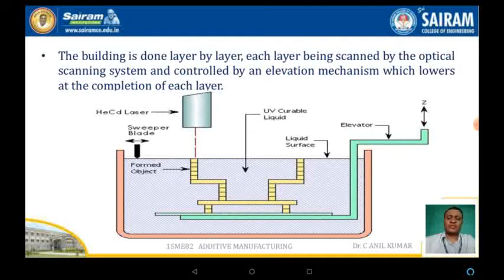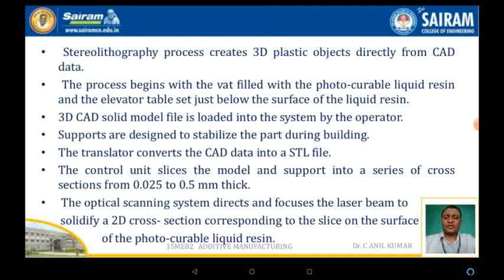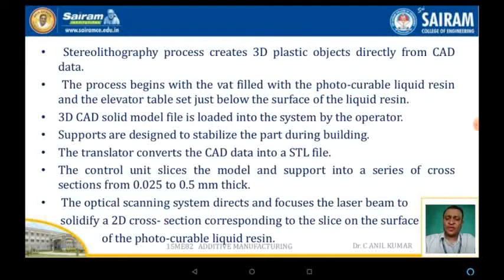Building is done layer by layer. Each layer is scanned by the optical scanning system and controlled by the elevating mechanism, which lowers at the completion of each layer. The stereolithography process creates a 3D plastic object directly from CAD data, beginning with a vat filled with photo-curable liquid resin and an elevator table set just below the surface of the liquid resin.